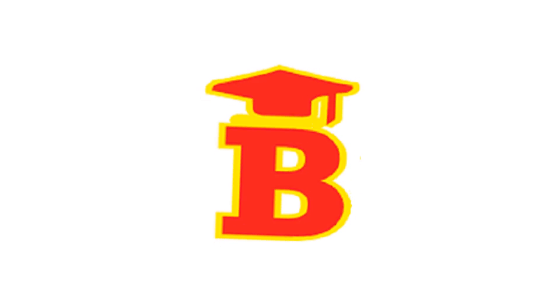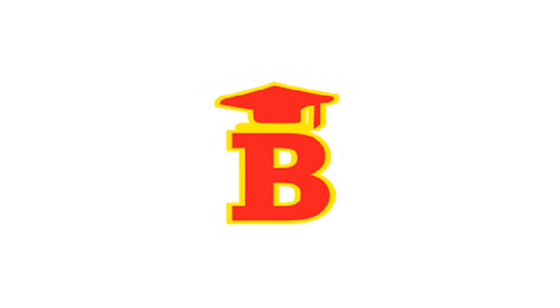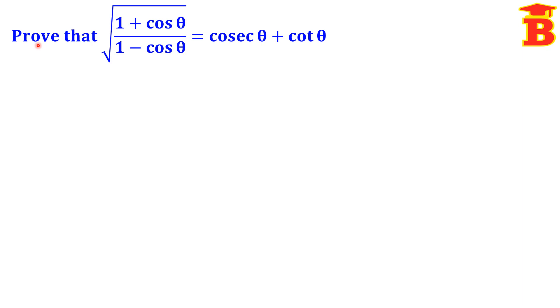Welcome to Bright Mass. This is a trigonometry proof. We have to prove that the square root of (1 plus cos theta) divided by (1 minus cos theta) is equal to cosecant theta plus cot theta.